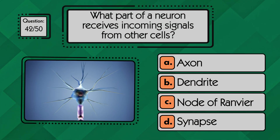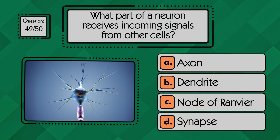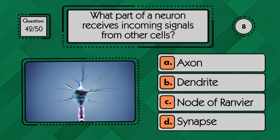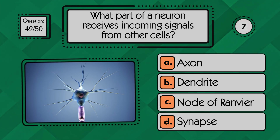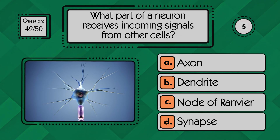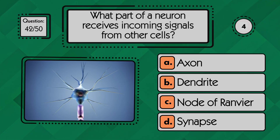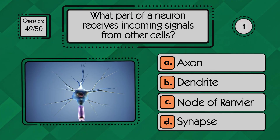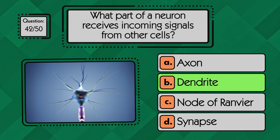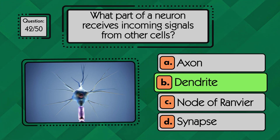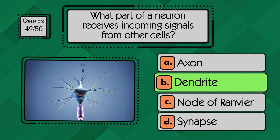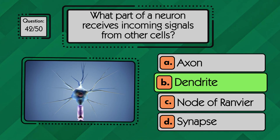What part of a neuron receives incoming signals from other cells? Dendrites are the structures that receive incoming signals from other neurons.